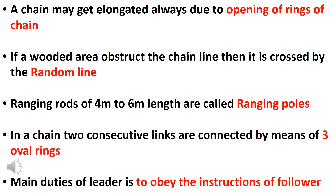The chain may get elongated due to opening of rings of the chain. If a wooded area obstructs the chain line, then it is crossed by the random line. Ranging rods of 4m to 6m length are called ranging poles. In the chain, 2 consecutive links are connected by means of 3 oval rings.